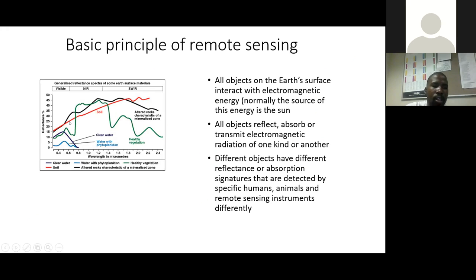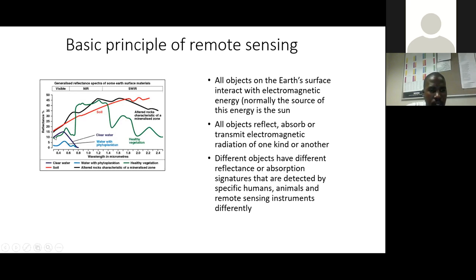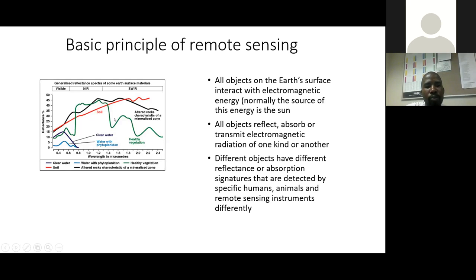Soil has high reflectance — it highly reflects the visible energy all the way up to the shortwave infrared energy. When you look at green vegetation, it absorbs some energy within the blue and red zones, and then it reflects highly in the green region. That's why we see green vegetation. It also reflects a lot of energy in the near infrared, before it absorbs some in the shortwave infrared region.